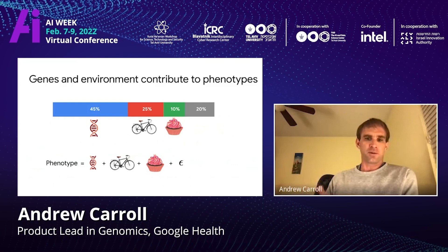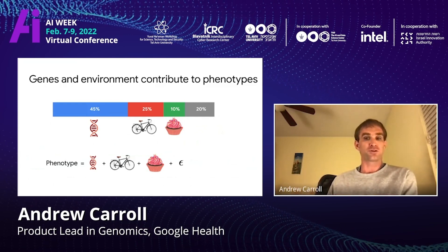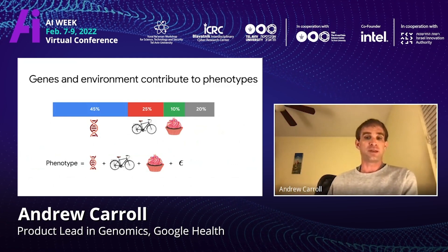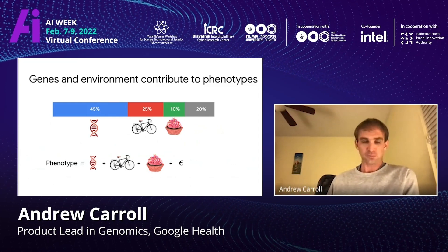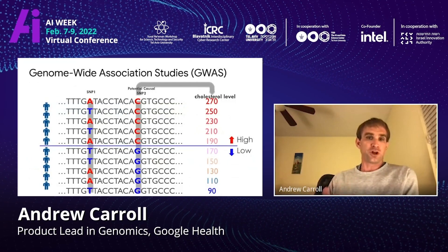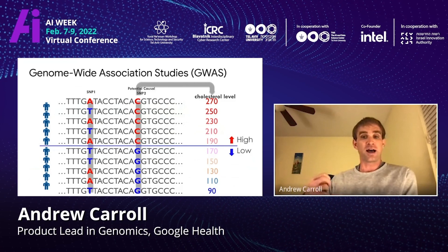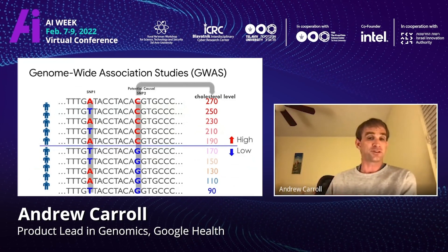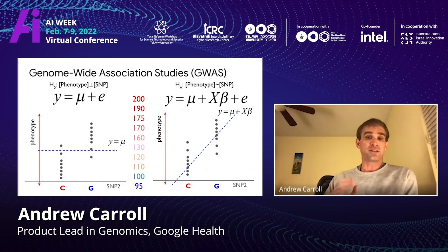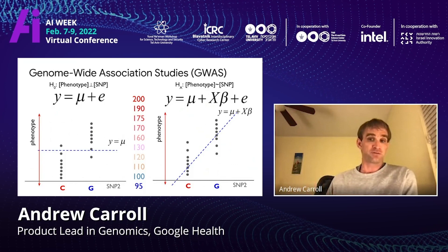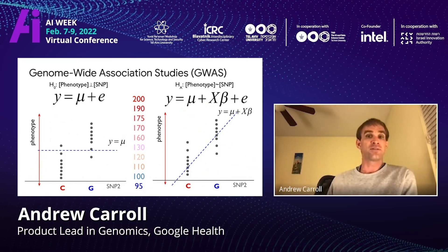We know that an individual's phenotypes are a combination of their genetic predisposition as well as environmental influences. For any given trait, the contributions might differ — maybe 45% genetic, 25% driven by exercise, 10% by diet, and 20% by other environmental factors. In genome-wide association studies, we want to identify genetic positions statistically associated with higher or lower levels of a given trait — effectively testing the difference between a null hypothesis versus an actual effect between variants. Because we're testing 3 billion different positions, we need genome-wide levels of statistical significance, so there must be a high bar to determine that an association is significant.